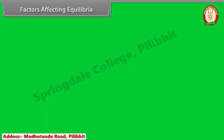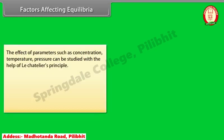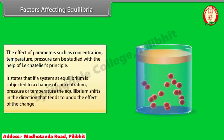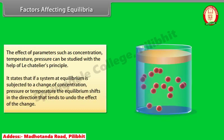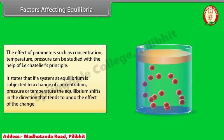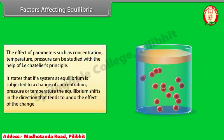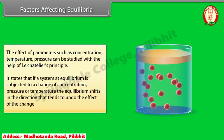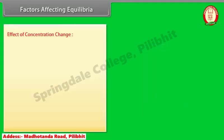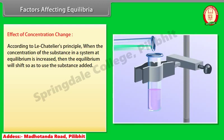Factors Affecting Equilibria. The effect of parameters such as concentration, temperature, and pressure can be studied with the help of Le Chatelier's principle. It states that if a system at equilibrium is subjected to a change in concentration, pressure, or temperature, the equilibrium shifts in the direction that tends to undo the effect of the change. Effect of concentration change: when the concentration of a substance in a system at equilibrium is increased, the equilibrium will shift so as to consume the substance added.